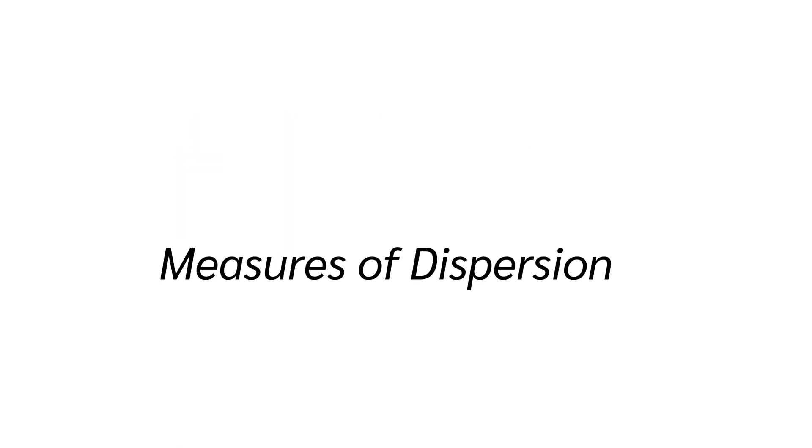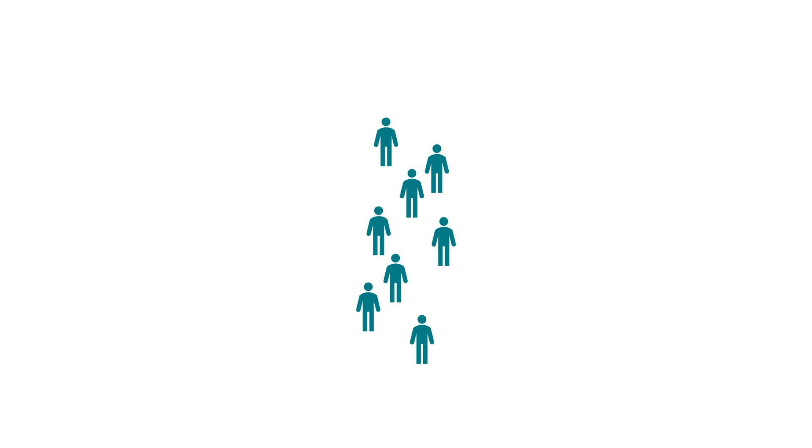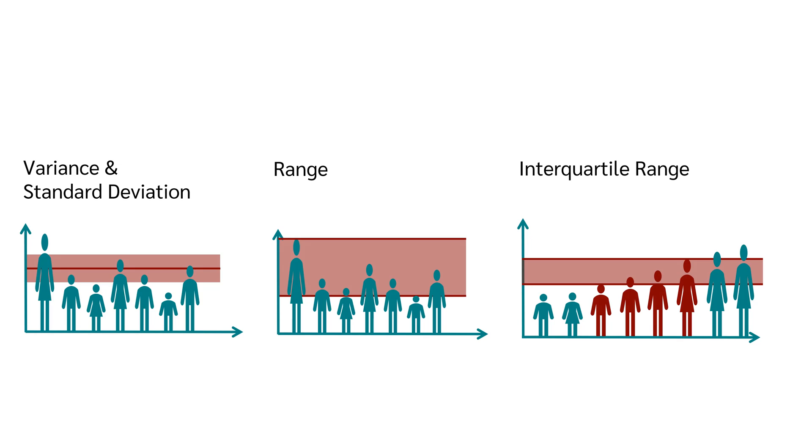Let's continue with the measures of dispersion. Measures of dispersion describe how spread out the values in a data set are. Measures of dispersion are for example the variance and standard deviation, the range and the interquartile range.